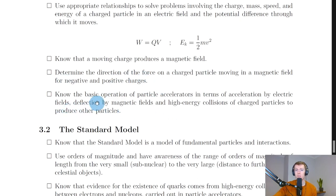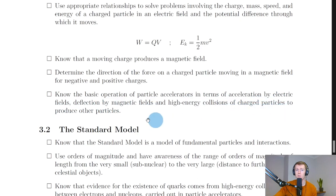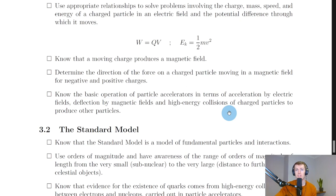Lastly for section one, you should know the basic operation of particle accelerators in terms of acceleration by electric fields, deflection by magnetic fields, and high energy collisions of charged particles to produce other particles. We looked at different types: cathode ray tubes, linear accelerators, cyclotrons, and synchrotrons, and also the Large Hadron Collider as an example.